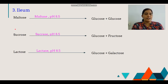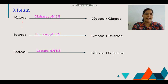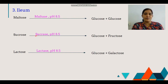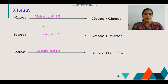After the duodenum, there is no further digestion of carbohydrates until the ileum, the last part of the small intestine, where disaccharides are converted into monosaccharides. The three disaccharides are maltose, sucrose, and lactose. Maltase acts on maltose to yield glucose and glucose. Sucrase breaks down sucrose into glucose and fructose. Lactase converts lactose into glucose and galactose. These three enzymes work at 8.5 pH.